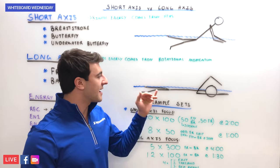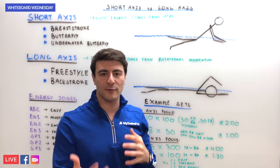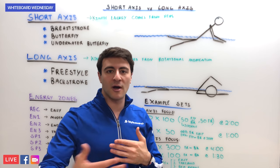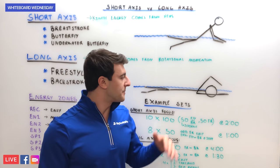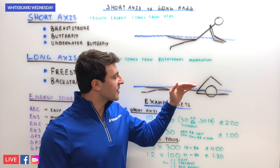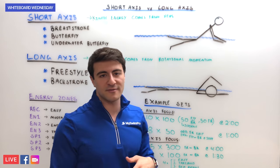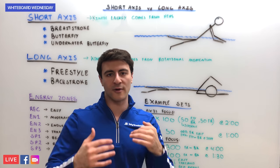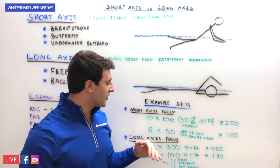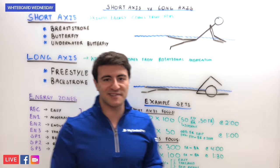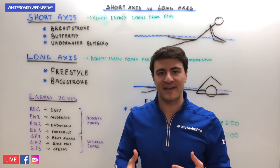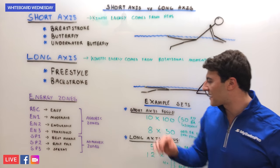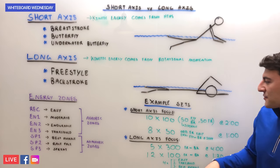This is different from a long axis stroke like freestyle and backstroke, where you can afford to swim a longer distance because you're not going to experience the negative effects of sinking lower and lower in the water. Let's look at some example sets to really understand the difference between these types of strokes.